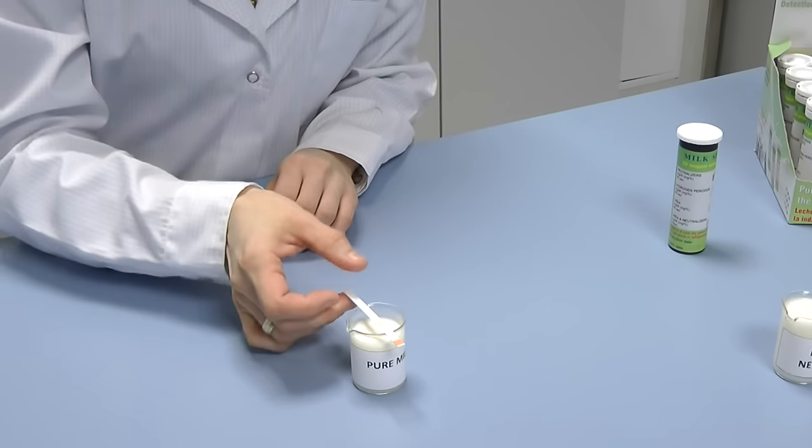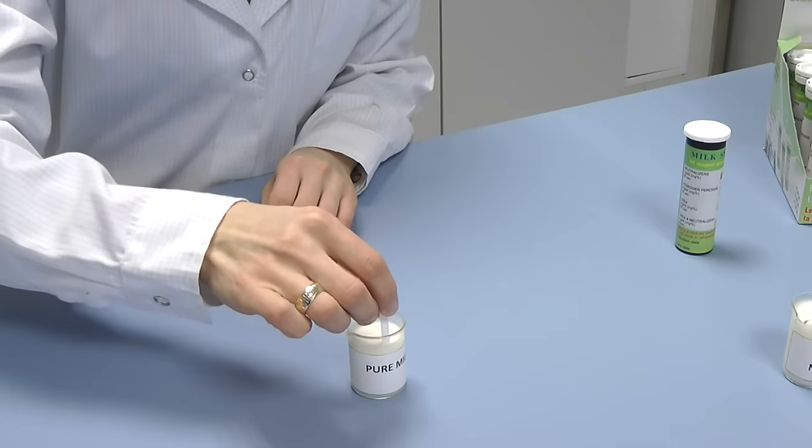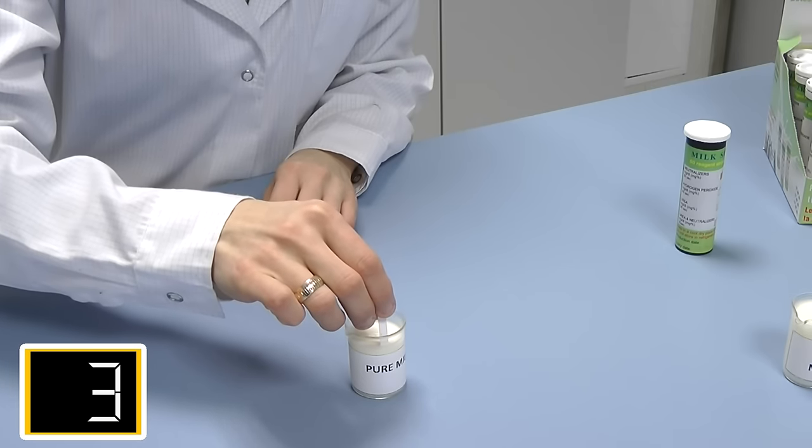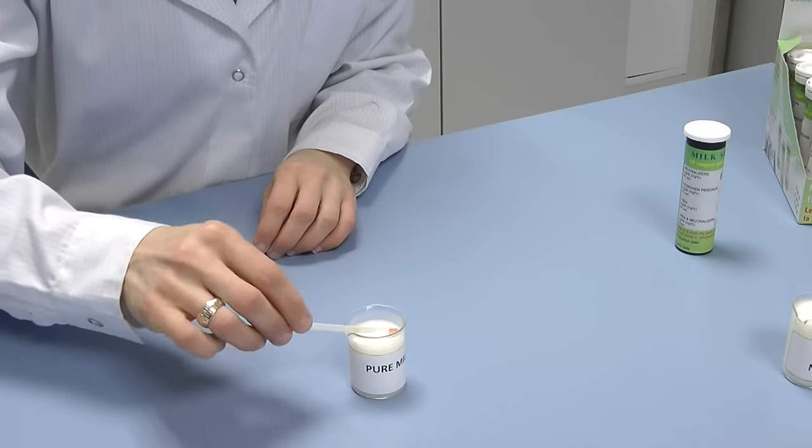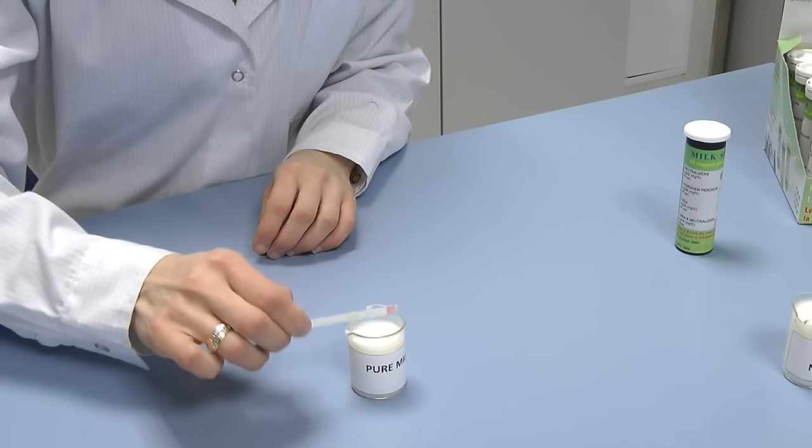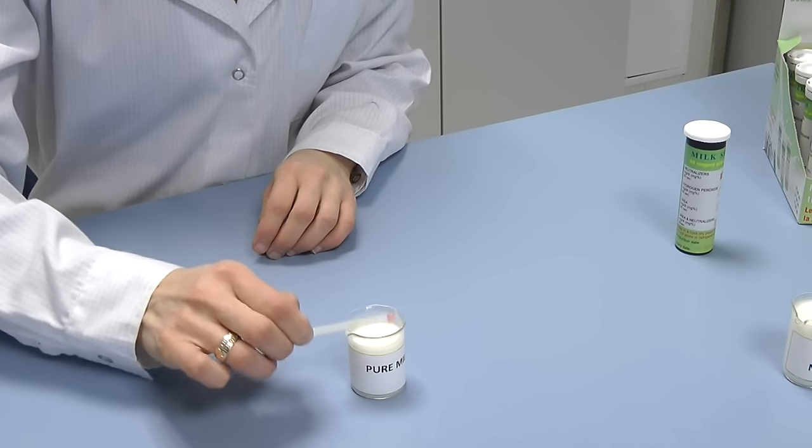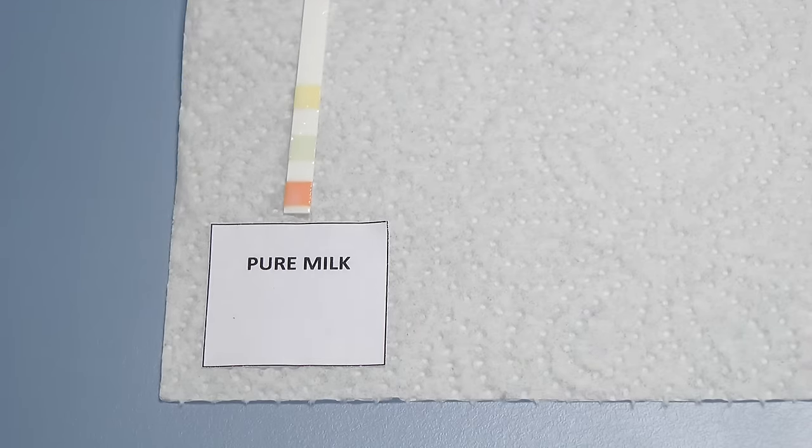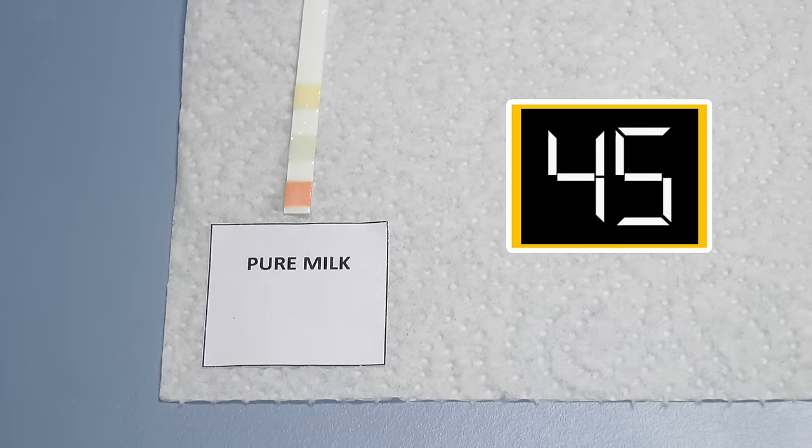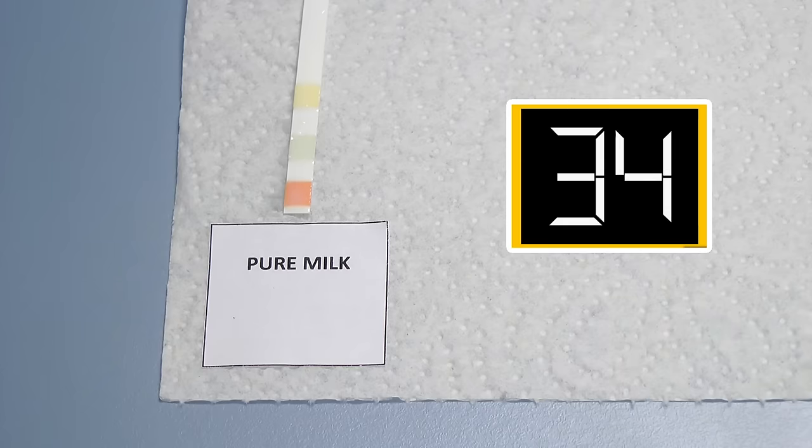Dip the indicator zone of the test strip in the milk sample, leave it there for 3 seconds. After the test strip is taken out of the milk sample, completely remove all milk drops from it by tapping on the edge of the cup. Place the test strip on the paper towel for complete absorption of the milk residues. Wait 60 seconds.